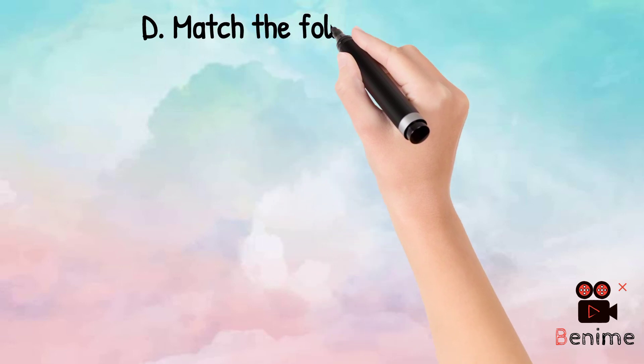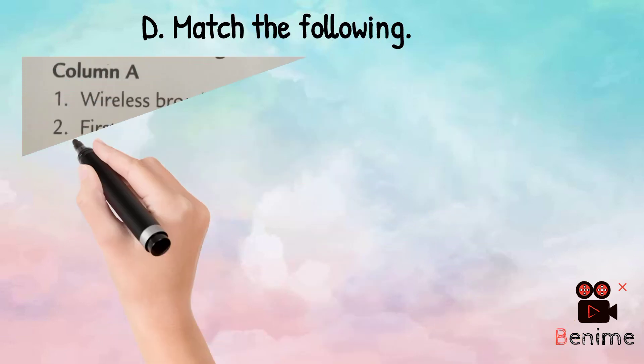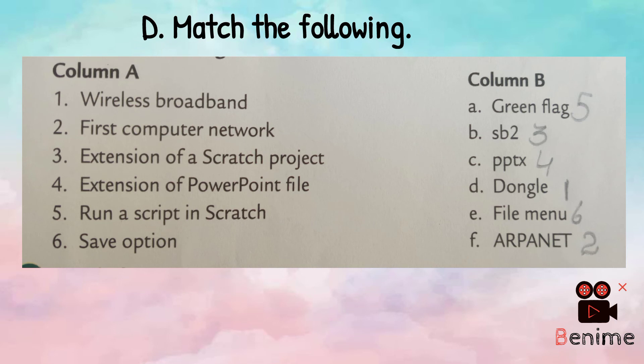Part D: match the following — match column A with column B. First, wireless broadband — the answer is dongle; match first with D. Second, first computer network — the answer is ARPANET; match second with F. Third, extension of a Scratch project — the answer is SB2; match third with B.